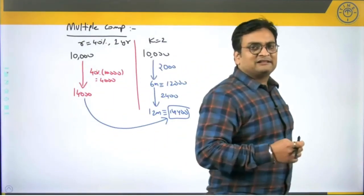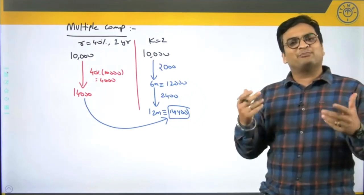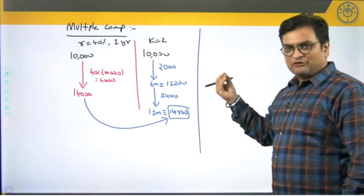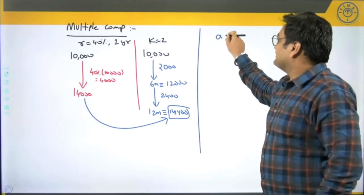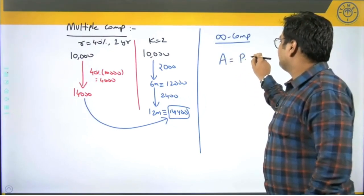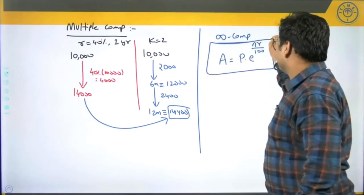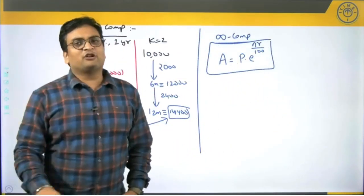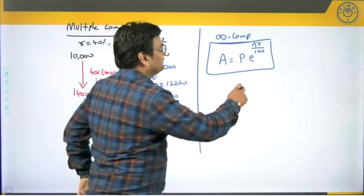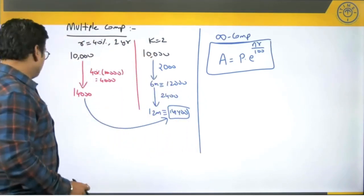It is more than the amount we got earlier because we increased the compounding. One general understanding: if you compound for more number of times, the total interest accumulated is going to be bigger — more compounding means more interest. However, there is one small formula for the infinite compounding case: the final amount is given as P × e^(n × r/100), where e is the constant 2.718, n is the number of years, and r is the rate of interest. If a CAT exam question involves infinite compounding, this is the formula to remember.